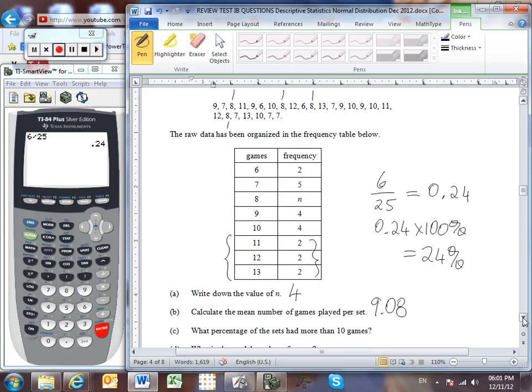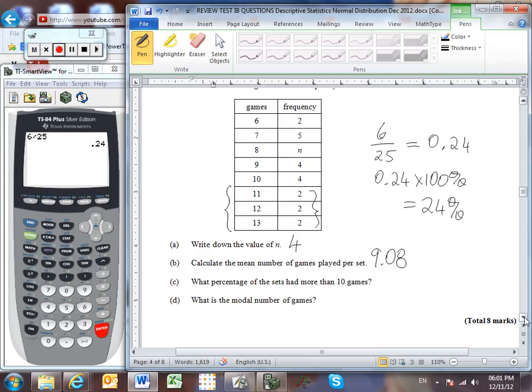And lastly, part D asks us, what is the modal number of games? Mode means the one that occurred the most frequently. 5 was the highest number in the frequency table, and so the modal number of games was 7.